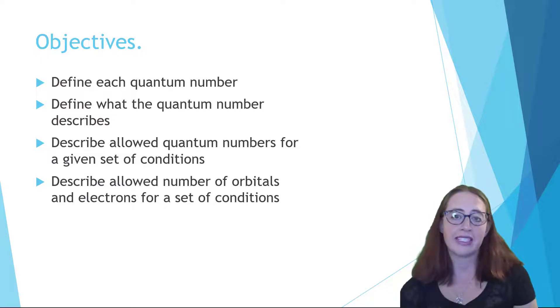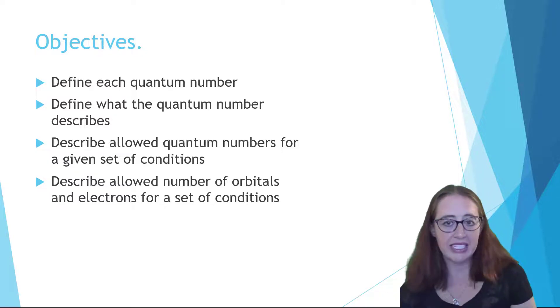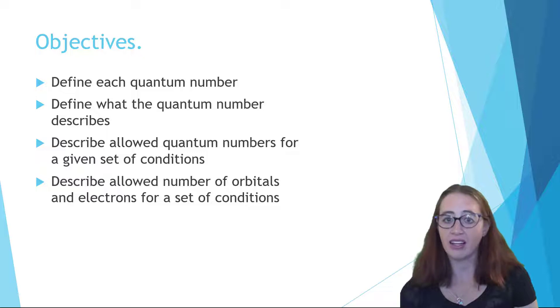In this video, we will cover quantum numbers. We have already alluded to several of these in other videos and have used the results that come from an understanding of them in others. We will cover four quantum numbers that describe electrons and atoms and link them to our discussions of orbitals and electron configurations. We'll discuss what the rules for the numbers are and how you can use these rules to count the number of orbitals and electrons.